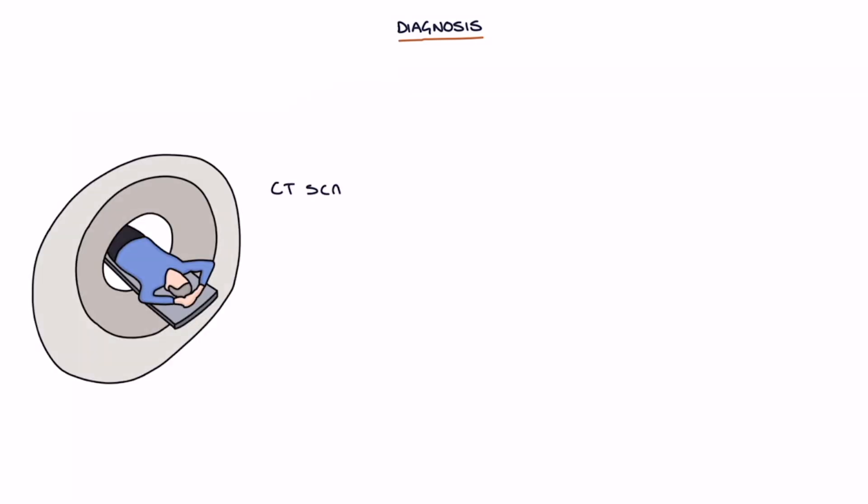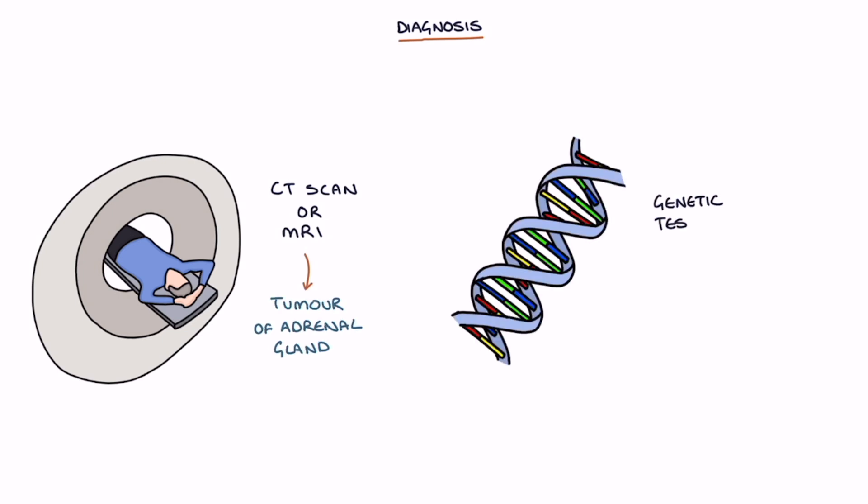A CT scan or MRI can be used to look for a tumour of the adrenal glands. Genetic testing may be advised to look for a genetic cause including testing the relatives.